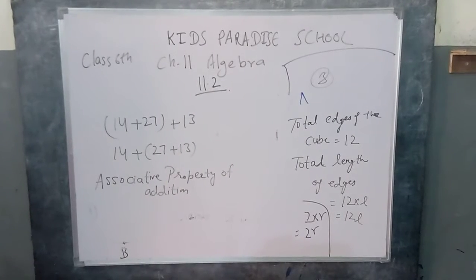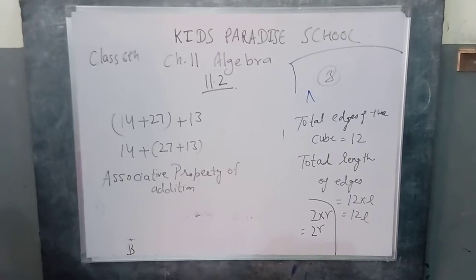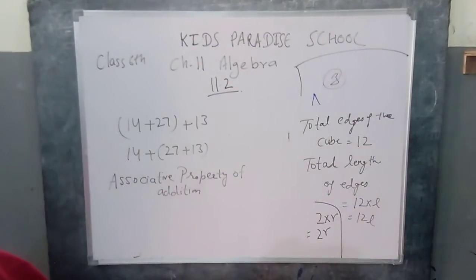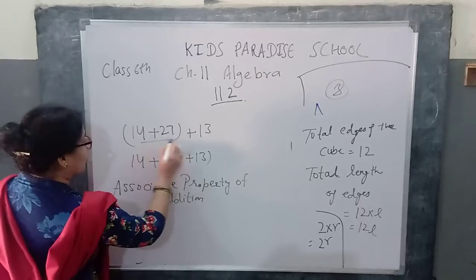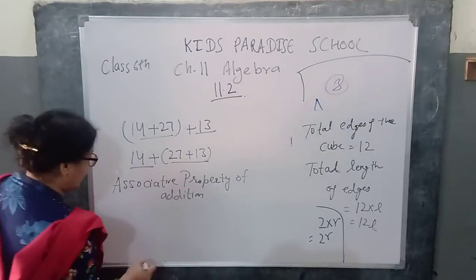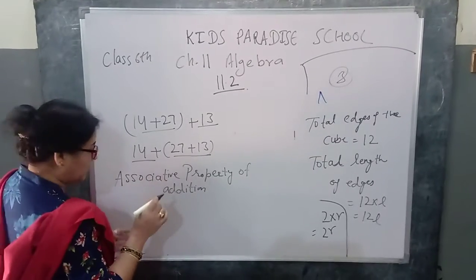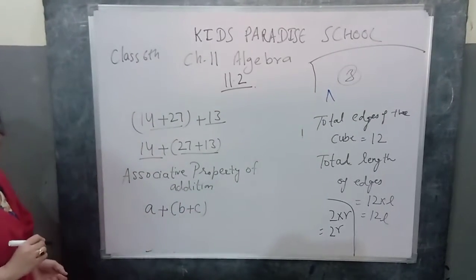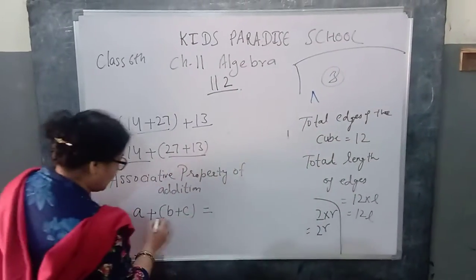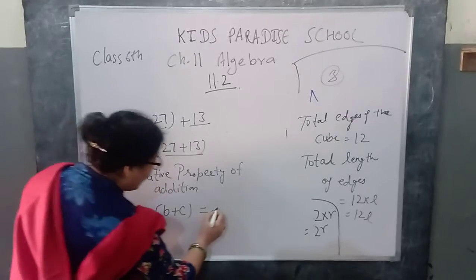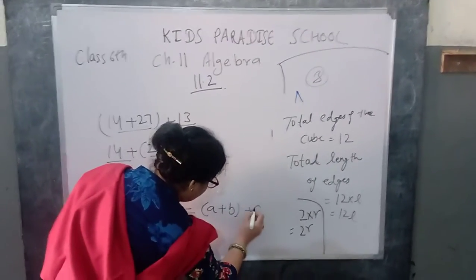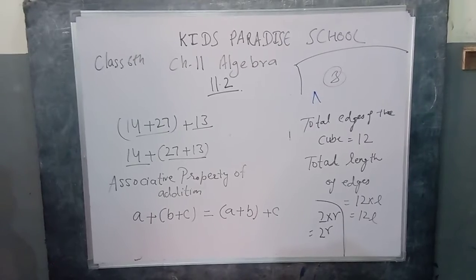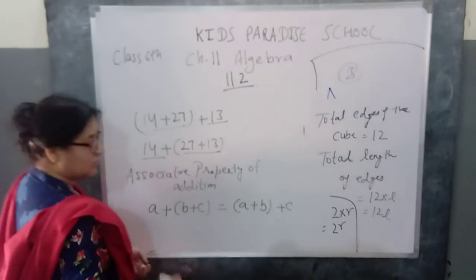In general form, if you take any three whole numbers A, B, C, then you may write as A plus B plus C. The associative property of addition states that (A + B) + C = A + (B + C). For any three whole numbers, the associative property of addition is true.